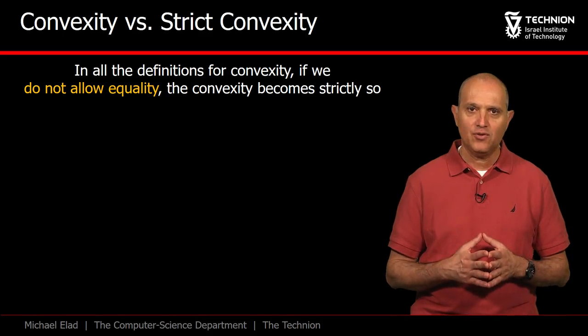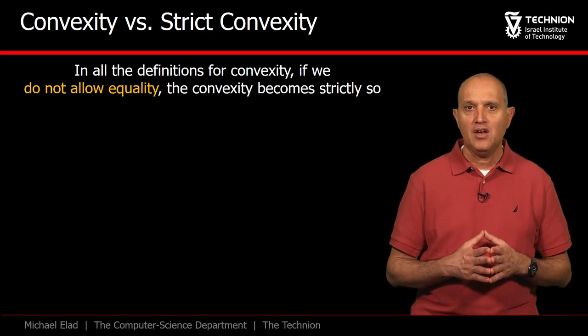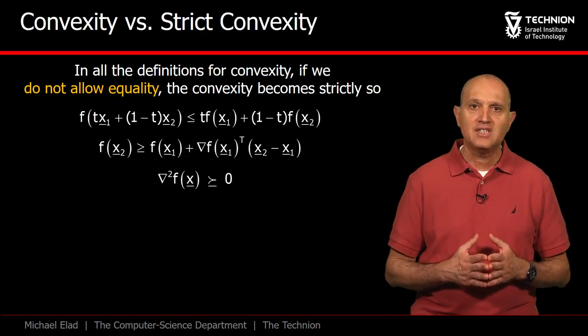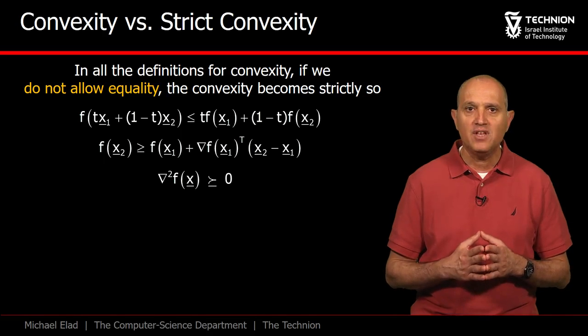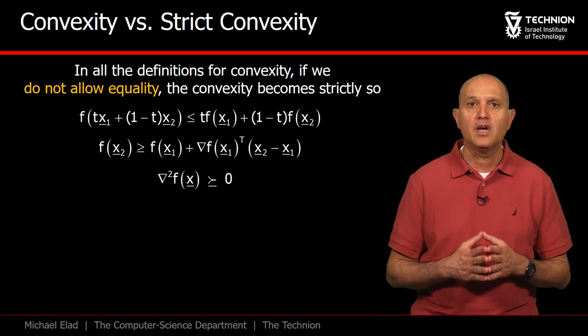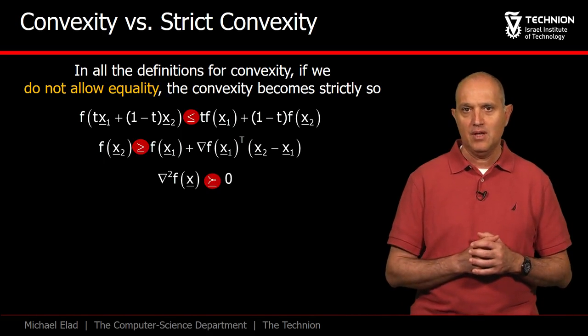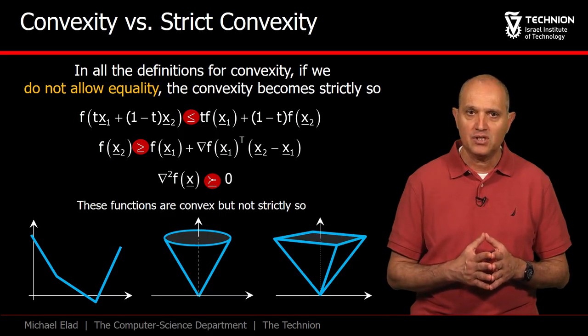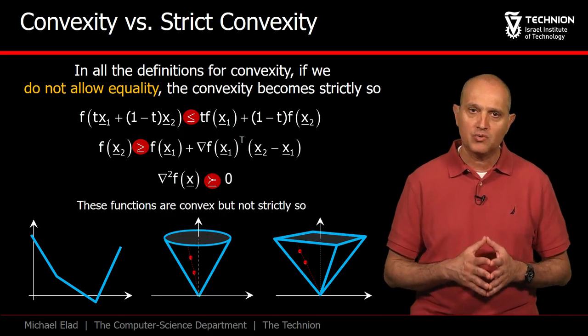We have seen several definitions for the convexity of functions, and all relied on inequalities. We say that a function is strictly convex if these inequalities do not allow equality apart from on the barriers. The examples given here demonstrate three cases of functions that are convex, but not strictly so.